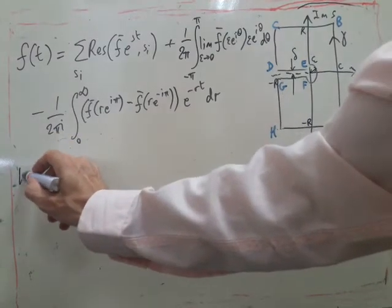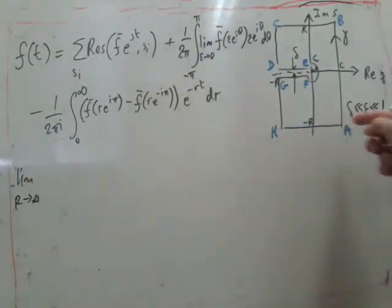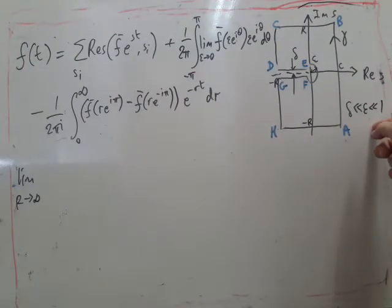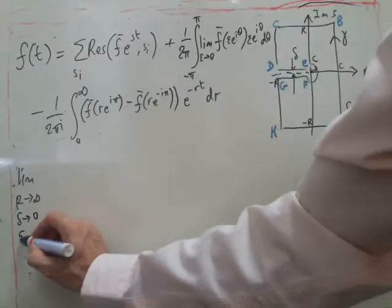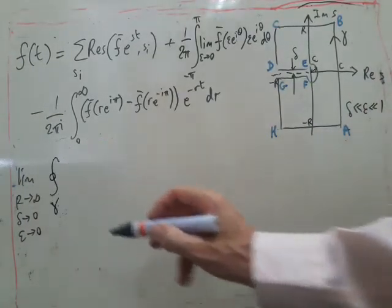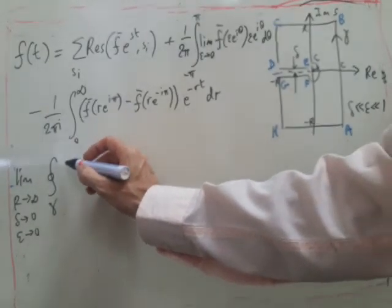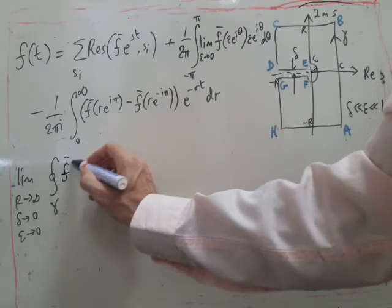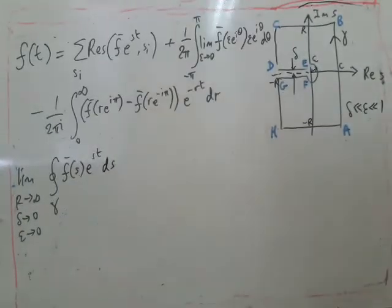So take the limit as r goes to infinity and also these things. So it's basically as δ goes to zero and ε goes to zero. Of the integral around that contour, γ of f̄(s) e^(st) ds.